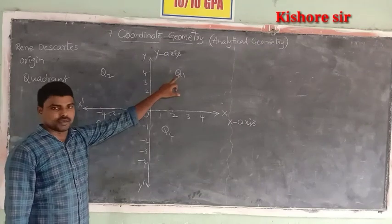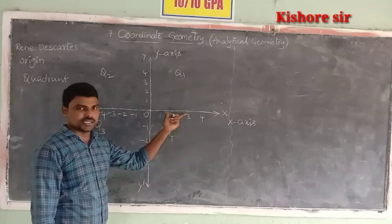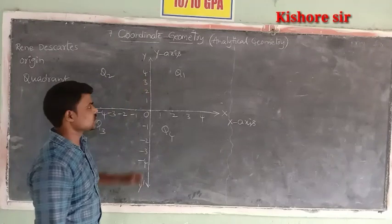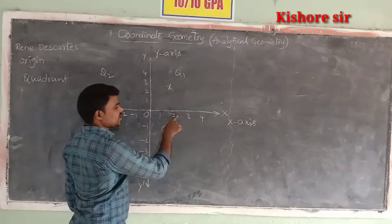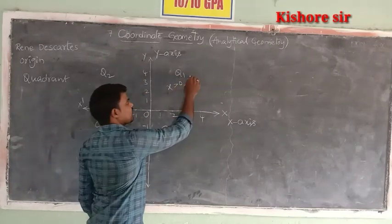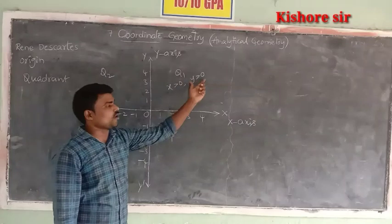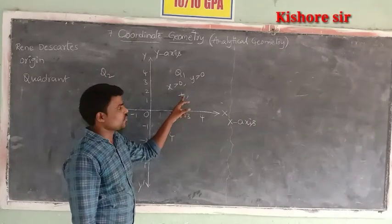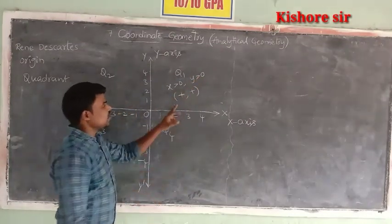Now, in Quadrant 1, the x-coordinates are positive — that is, x greater than zero — and the y-coordinates are also positive, y greater than zero. So in Quadrant 1 both are positive. In Quadrant 2, x-coordinates are negative, meaning x less than zero, but y-coordinates are positive, y greater than zero.